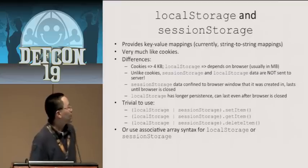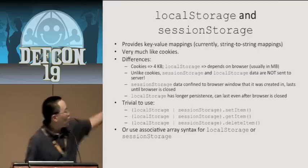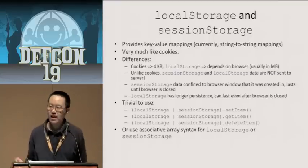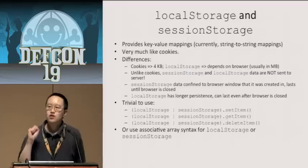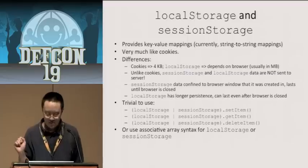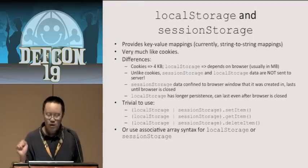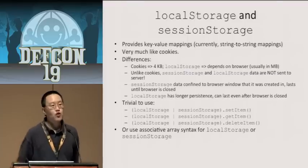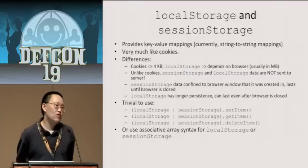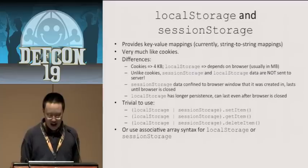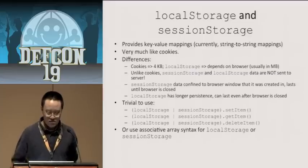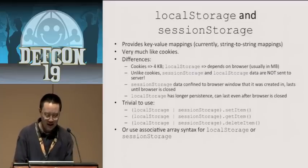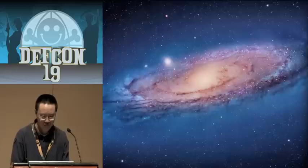How do you use local storage or session storage by way of JavaScript? Really simple — it's localStorage or sessionStorage dot getItem, dot setItem, or deleteItem. Or if you prefer, you can use the associative array hash syntax using square brackets.